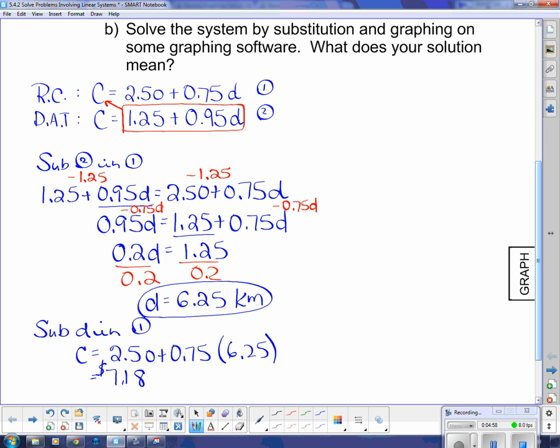Okay, so what does that actually mean as far as the question is concerned? That means that these two companies, if I drive 6.25 kilometers, the cost will be $7.18 no matter which company I pick.